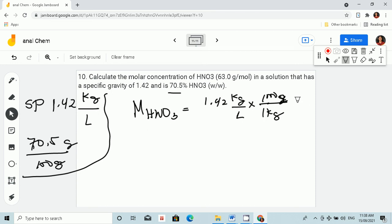Now, we are done with specific gravity times, times in a solution, we have 70.5 grams of HNO3 per 100 grams. Okay, then let's continue. So let's cancel first. Kilograms, kilograms, grams, grams, grams. And then we are left with grams of HNO3.